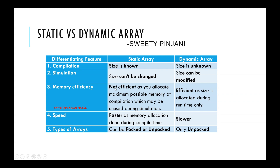What are the types of arrays? In static arrays, if contiguous arrangement is possible, it can be a packed or unpacked array. But a dynamic array is only an unpacked array.